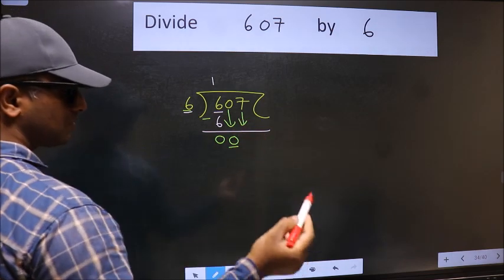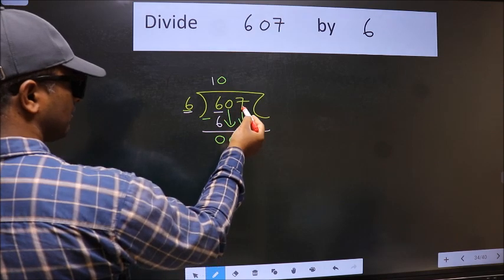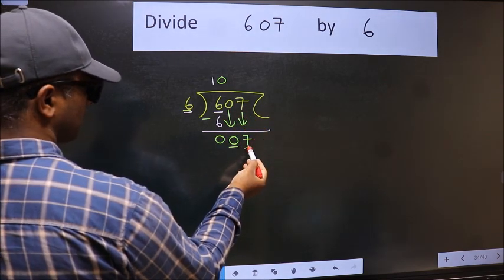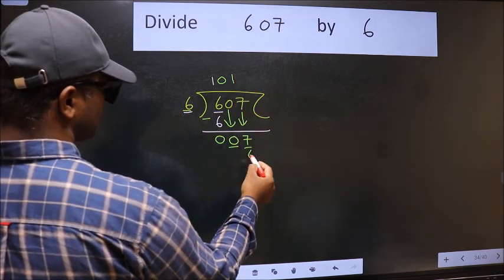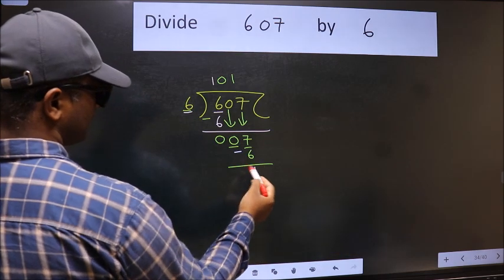And the rule to bring down 2nd number is we should put 0 here. Then only we can bring this number down. Now 7. A number close to 7 in 6 table is 6 once 6. Now we should subtract. We get 1.